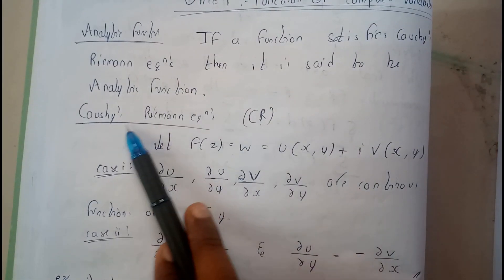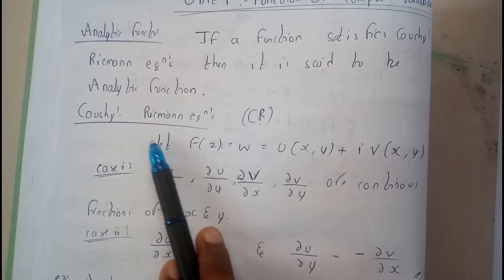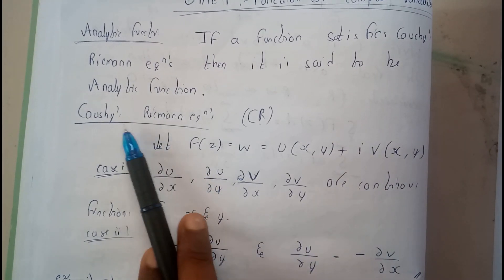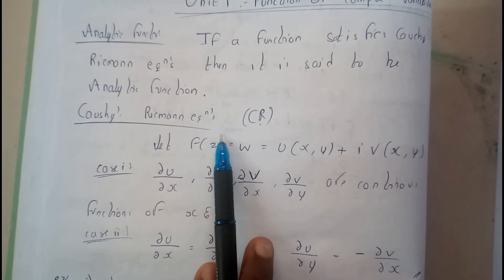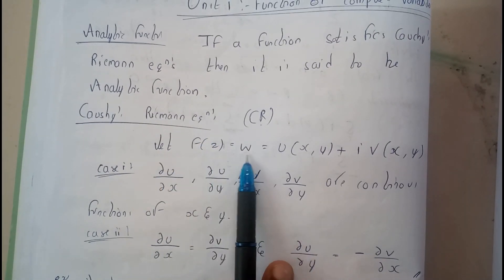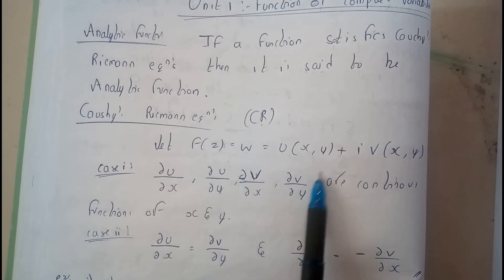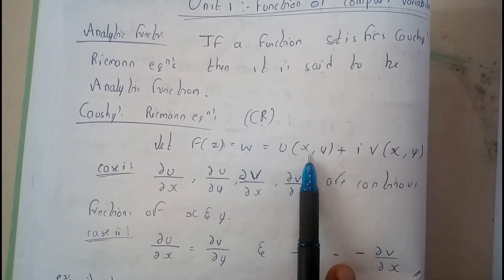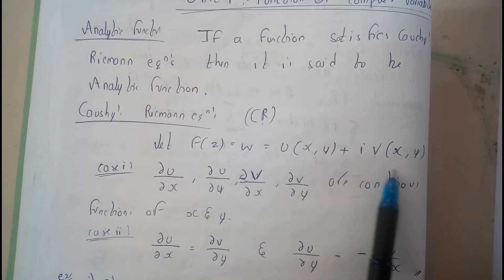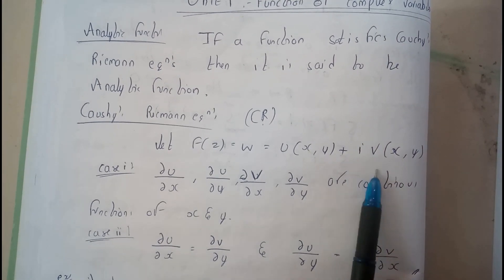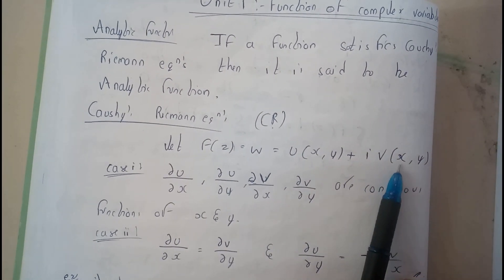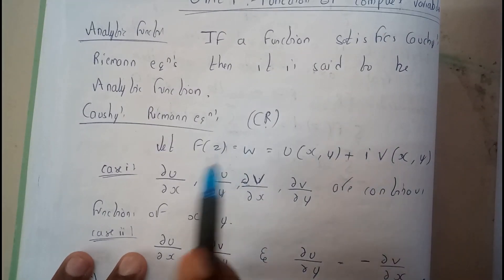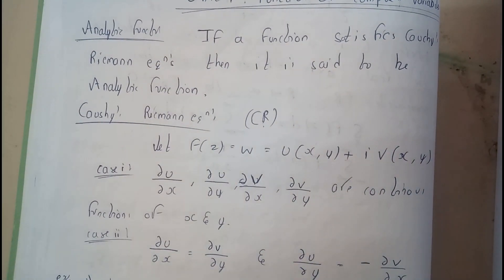Our first question is: what are Cauchy's Riemann equations? Let f(z) = w, where w = u(x, y) + i·v(x, y). So f(z) is a complex function, to be clear.